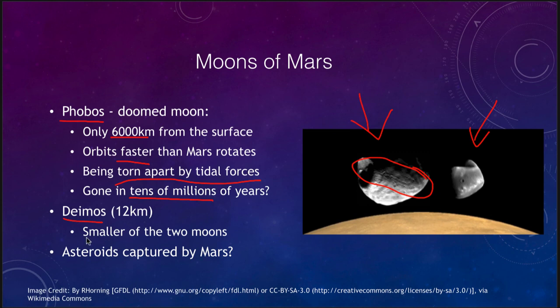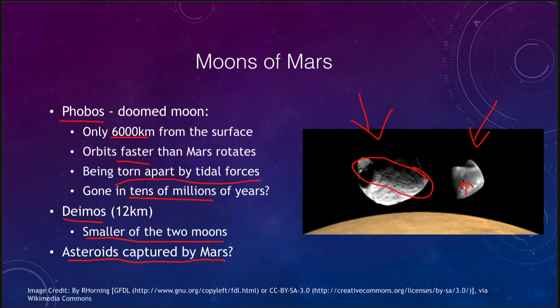Deimos is the smaller of the two moons. Both show impact craters from smaller objects hitting them. We don't believe they formed through a giant impact like Earth's moon. More likely they were captured asteroids — Mars, being so close to the asteroid belt, had many asteroids pass near it, and these two happened to pass just right to be captured.